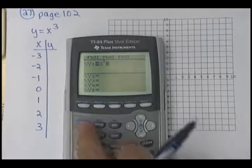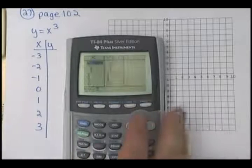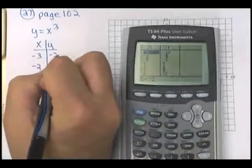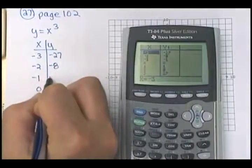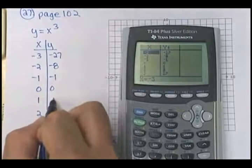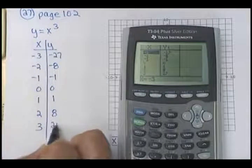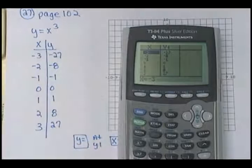All right. So now get your table. So when I get my table, I've got negative 27, negative 8, negative 1, 0, 1, 8, and 27.